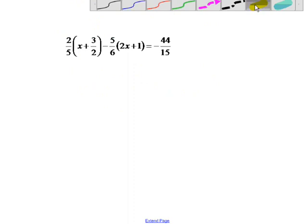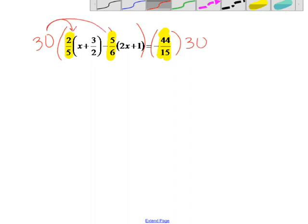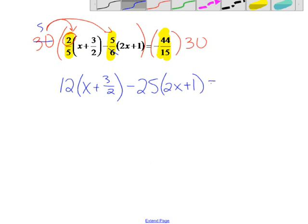All right. On this one, we're looking at just the fractions out in front. 2 fifths, 5 sixths. And because this one over here is a fraction, we're going to look at that too. We need a common denominator for 6 and 5 and 15, which is going to be 30. Multiply both sides by 30. Now what are you going to want to multiply the 30 by? You're going to multiply it times the 2 fifths and times the 5 sixths. That's it. So 5 goes into 30, 6 times, times 2 is 12. x plus 3 halves. It's okay that we have a fraction in there. We'll mess with it in a minute. 30 times 5 sixths. The 6 goes into 30 five times. 5 times 5 is 25. times 2x plus 1 equals 15 goes into 30 twice. So negative 88.